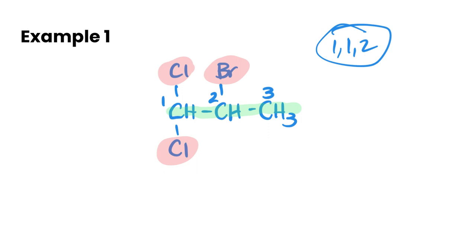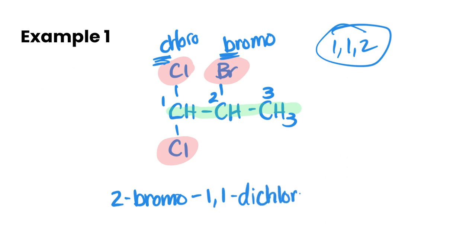Now we also need to make sure we've got a bromo here, and then we have chloro. Bromo with a B comes before chloro, so we need to put the bromo first and then the chloro second. So we're going to go 2-bromo and then we've got 1,1-dichloro, and our chain which is a propane. So it's 2-bromo-1,1-dichloropropane.